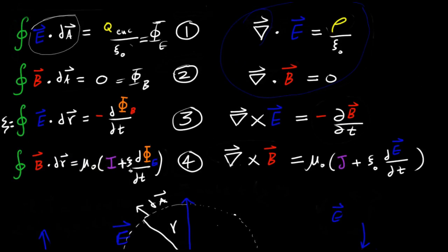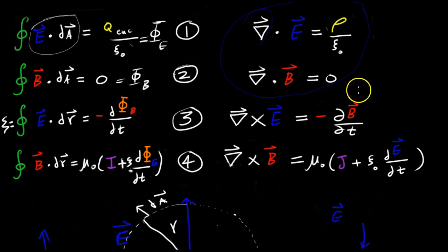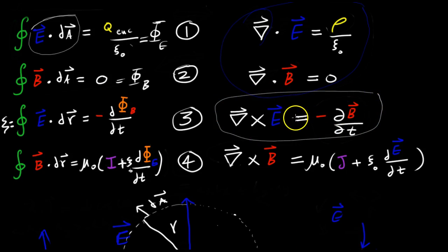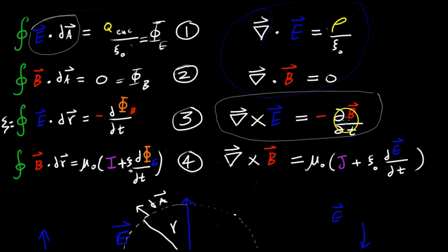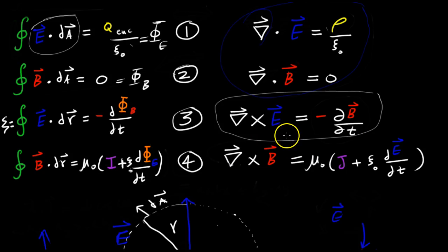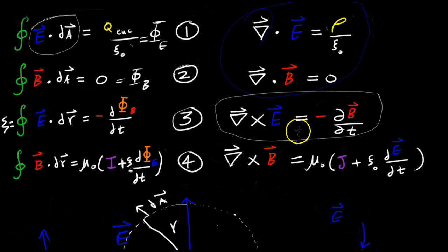The curl of the electric field is proportional to the change in the magnetic field. Basically what these two laws are saying is that if you change magnetic fields and electric fields, you're going to produce the corresponding field — so if you change the electric field you produce a magnetic field, and vice versa.